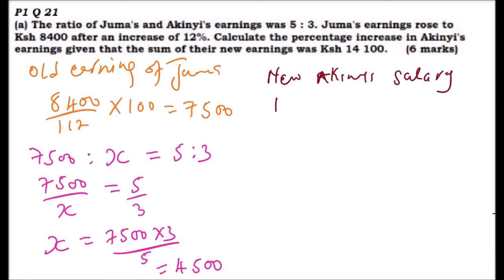The new Akinyi salary is the total of the new salary minus the salary of Juma which is 8400. Using your calculator you get this is 5700.